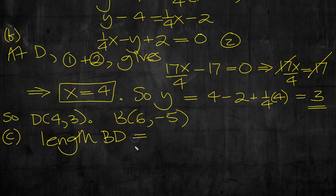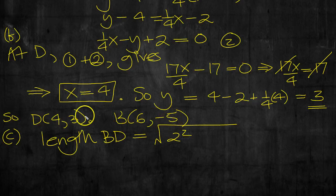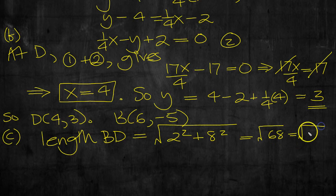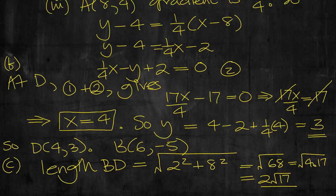So B is 6 minus 5, D is 4, 3. Length BD is equal to, I use Pythagoras, square root of the differences in the side squared. So 4 minus 6, the difference is 2, so that would be 2 squared. The difference between minus 5 and 3 is 8, so that would be 8 squared. 64 plus 4 is 68, so root 68, which is equal to, 68 is 34 and 17, so that would be 4, 17. So that would tidy up to 2 root 17.